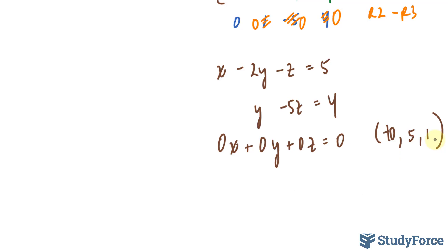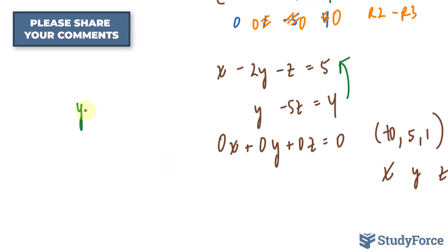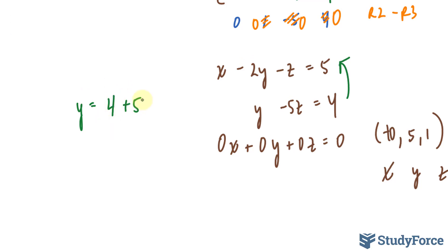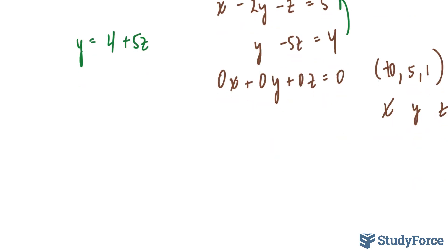So to represent your answer, what we have to do is find an expression that represents x, an expression that represents the solutions for y, and an expression for z. We can do that by focusing on this equation first and then performing back substitution. For instance, here I can say that y is equal to 4 plus 5z. So I just found an expression for all my y solutions, 4 plus 5z.